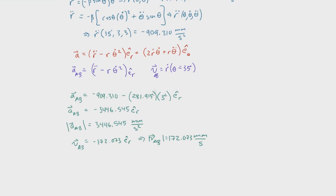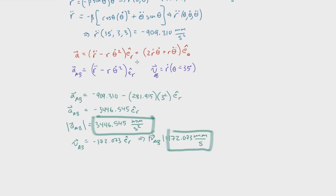Plugging in the values, the acceleration of AB is 3446.545 millimeters per second squared and the velocity is 172.073 millimeters per second. This problem was included because it shifts your thinking about polar coordinates — we're used to the r vector changing with time, not the whole equation rotating. The key insight is that the eθ component is not a valid component for the follower AB, and that's what makes this problem a little tricky.